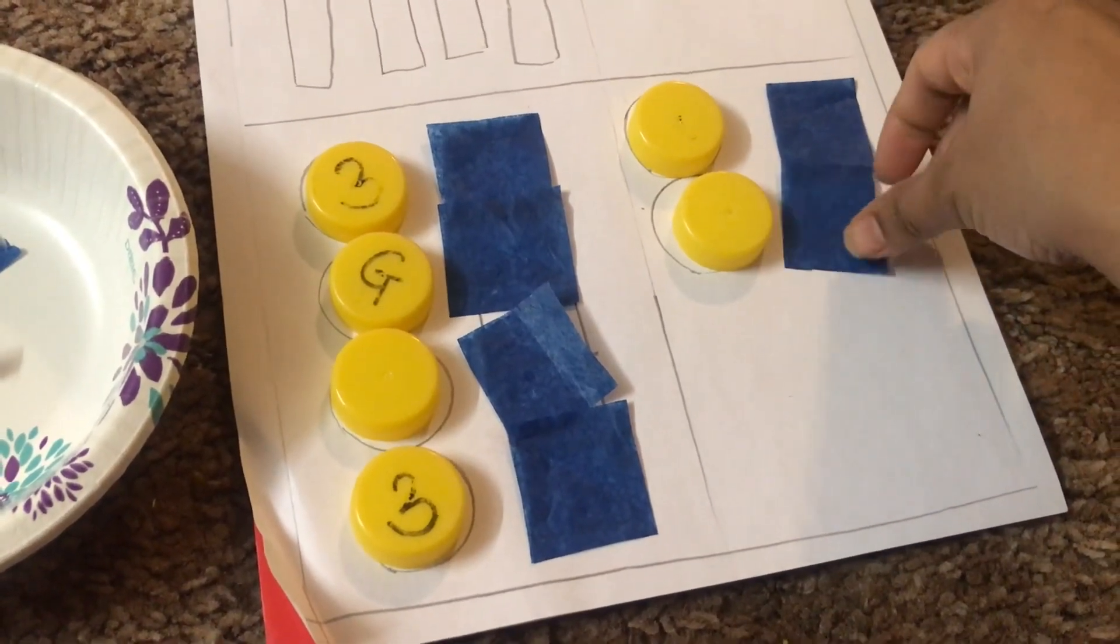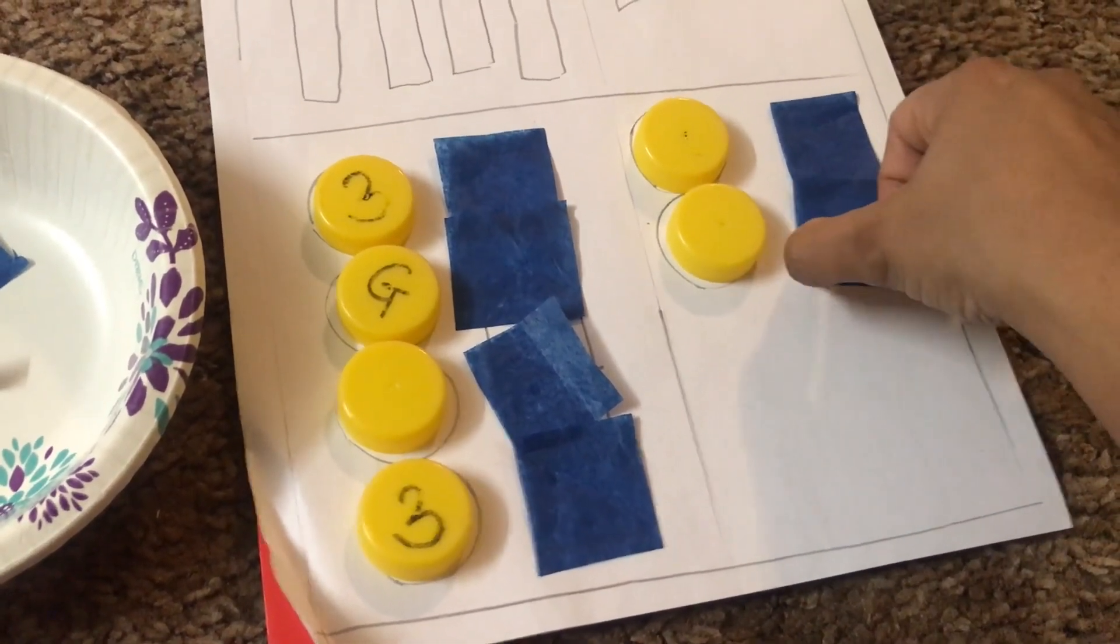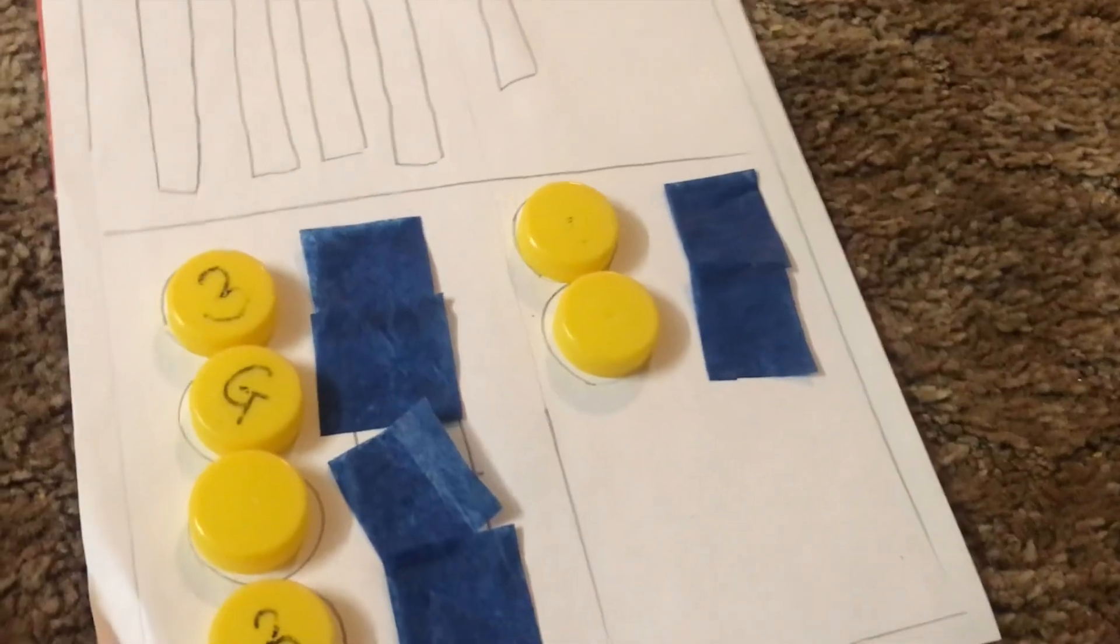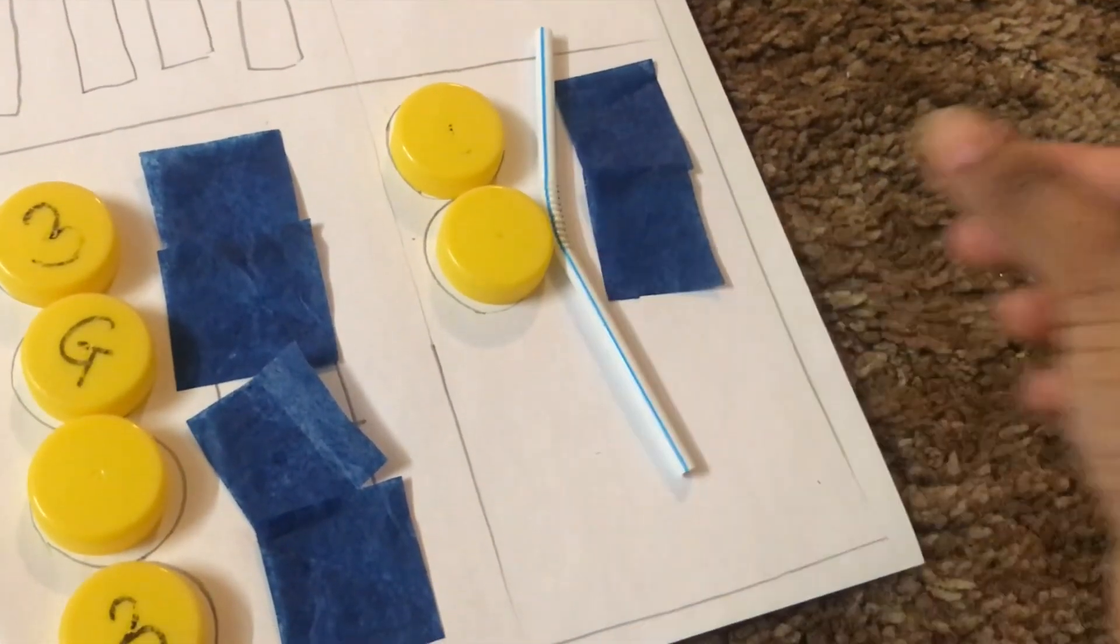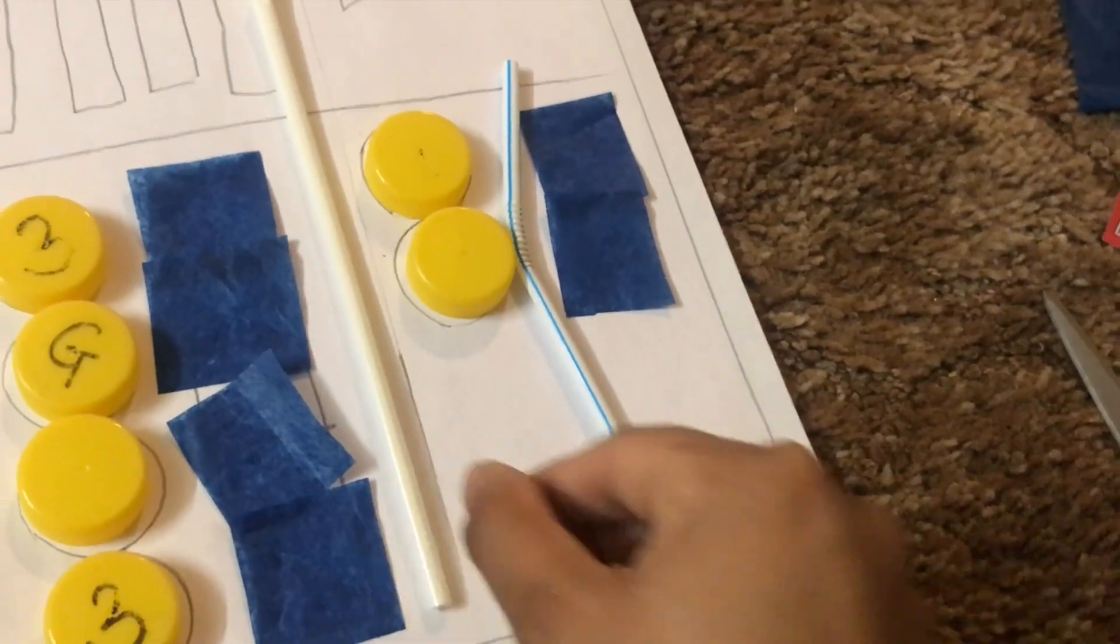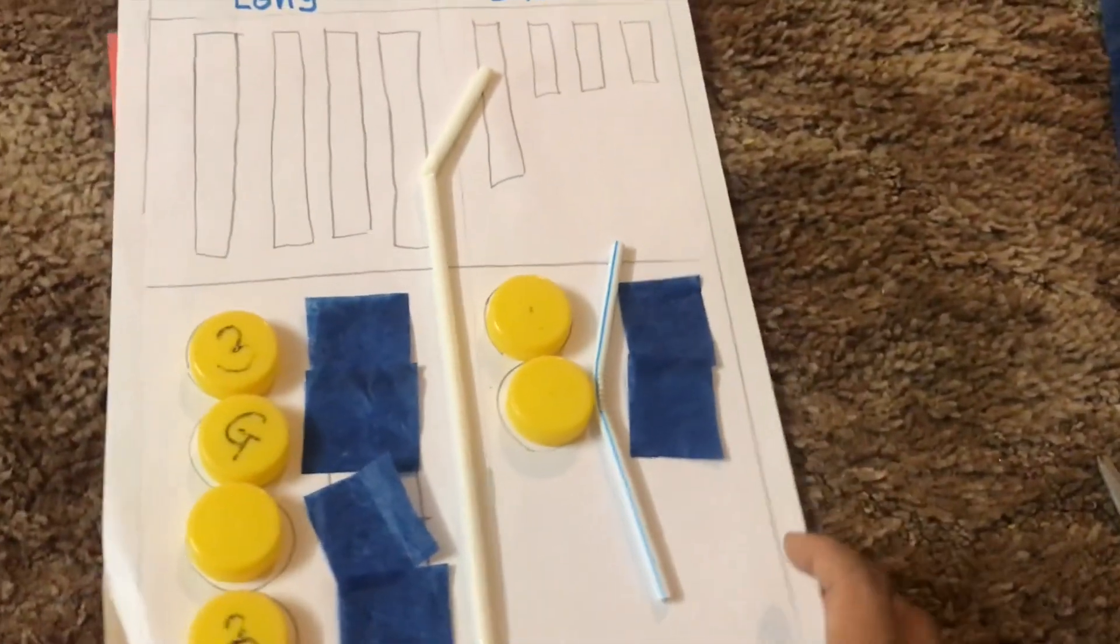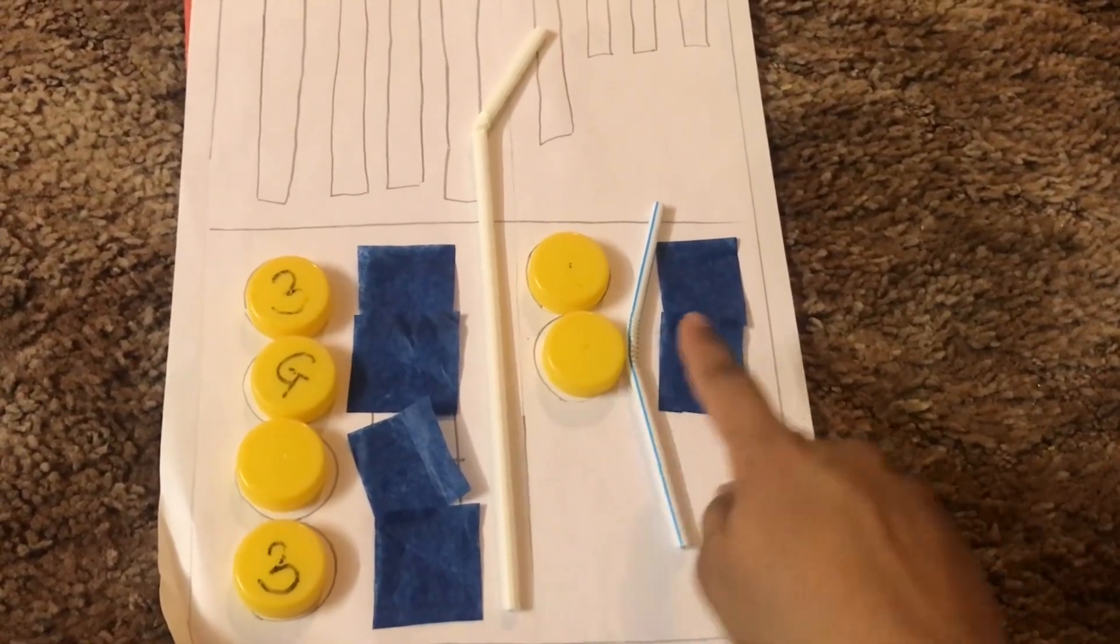Another way you can just use simple straws and cut them into long and short. There are many different ways of doing the same activity. The important thing is conveying the message of what is meant by long and what is meant by short.